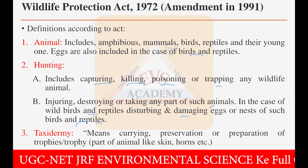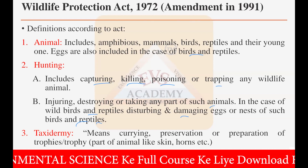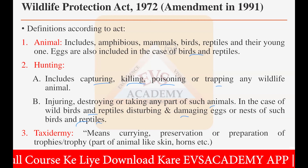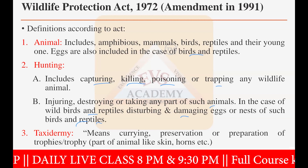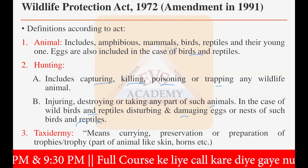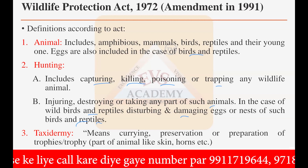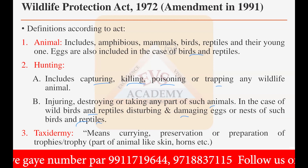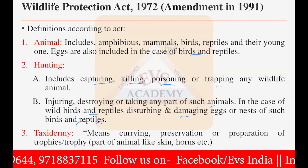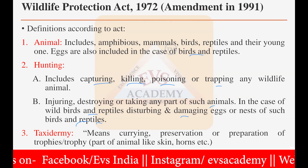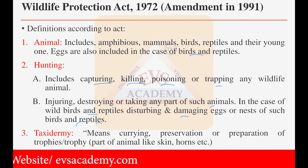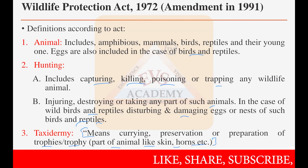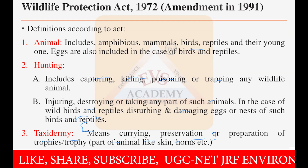The term 'taxidermy' is also defined in the Wildlife Protection Act 1972. In older king palaces, animal parts such as horns, elephant tusks, or tiger skin were used as decoration — that practice is called taxidermy, meaning the curing, preservation, and preparation of trophies or parts of animals like skin and horns. Taxidermy is now banned, but it was very popular earlier.